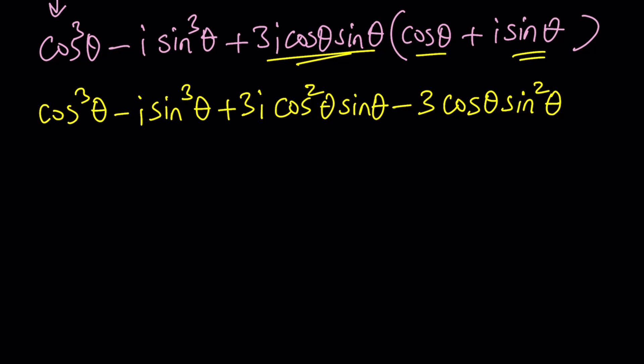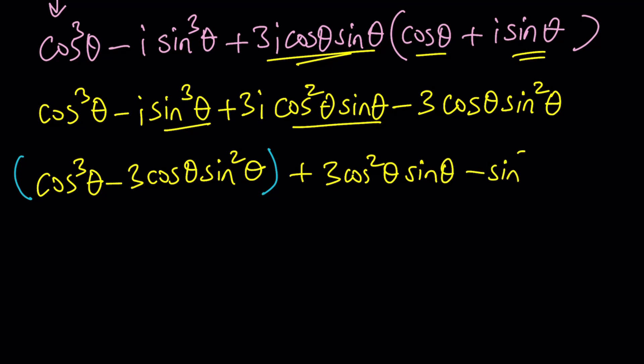Let's put the real parts together. We're going to get cosine cubed theta minus 3 cosine theta sine squared theta. I'm putting the real parts together. This is the real part. And then the imaginary part is this and this. So that's going to be 3 cosine squared theta sine theta minus sine cubed theta. And of course that's going to be multiplied by I.